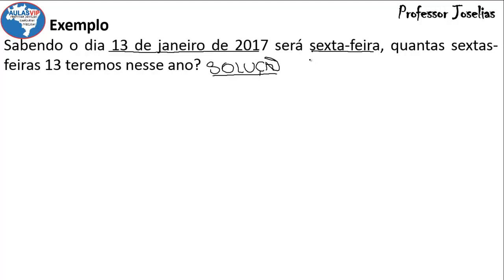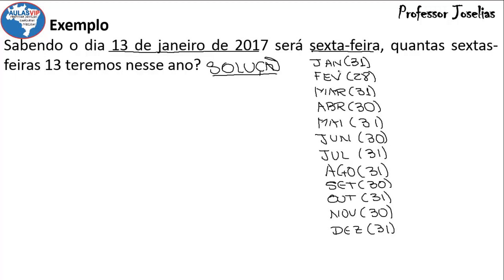E os meses? Vamos colocar aqui os meses de janeiro a dezembro e a quantidade de dias em cada mês. 2017 é um ano com 365 dias, portanto fevereiro vai apresentar 28 dias. Para saber em que dia da semana vai cair o dia 13 do mês, vou olhar quantos dias tem cada mês. Como a semana tem sete dias, vou dividir a quantidade de dias por 7. Janeiro tem 31 dias; dividindo 31 por 7, encontramos quociente 4 e resto 3. Isso significa que de janeiro para fevereiro, aquela mesma data vai avançar 3 dias na semana.